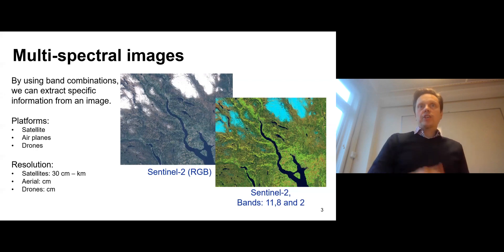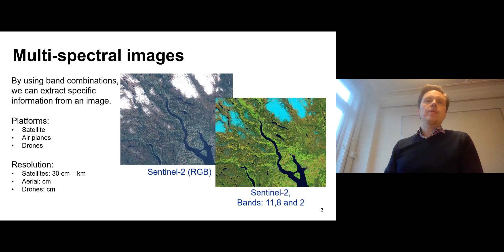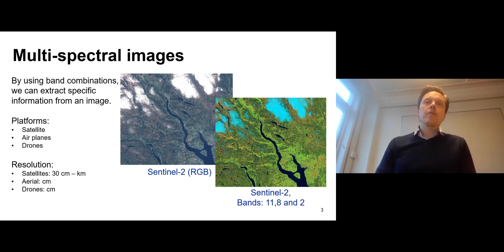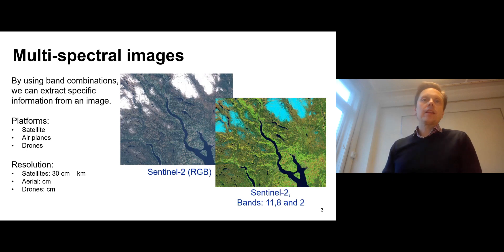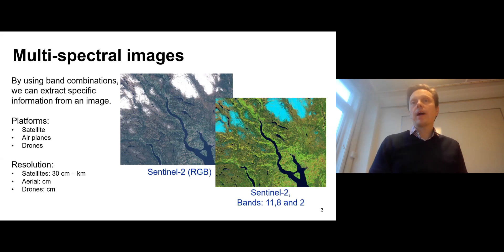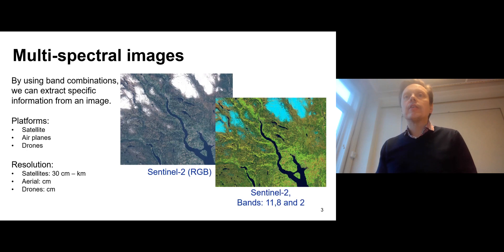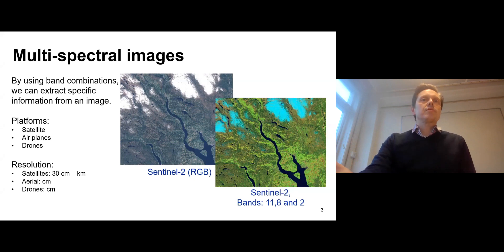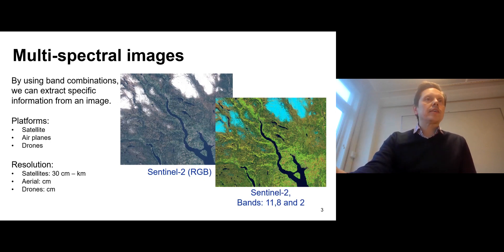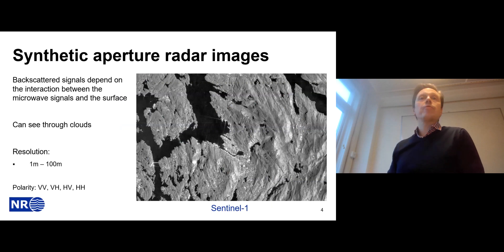This image is from a satellite called Sentinel-2, a European satellite providing free data. It contains 13 bands; the highest resolution four bands are at 10 meters. You can extract various kinds of information from it — the middle shows a standard RGB image, and to the left are other band combinations that enhance specific features, such as agricultural areas. This is the most popular sensor, mostly because you can visualize it.